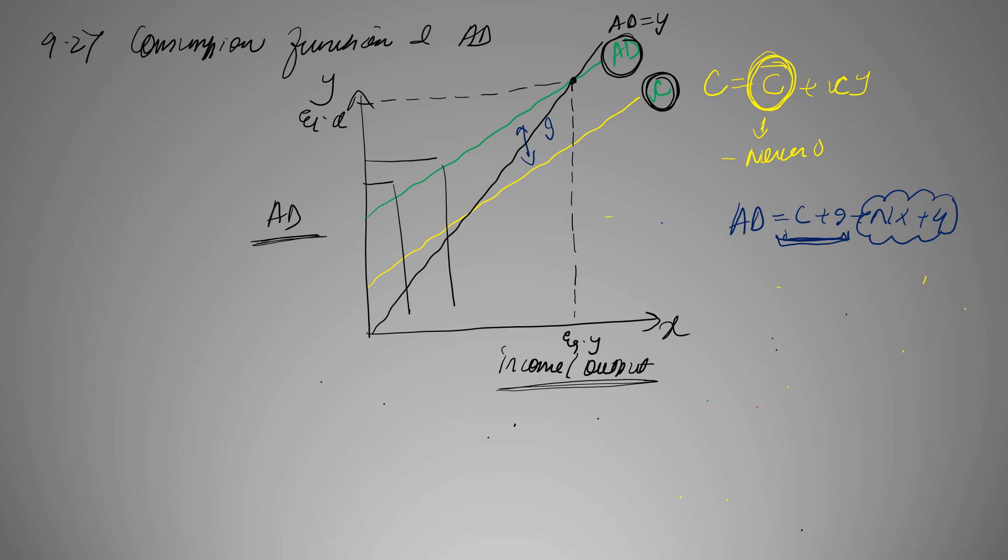Now, let us talk about savings. I just talked about consumption. You consume is equal to C bar plus CY. But what about S? S is the part of income that is not consumed. Hence, if this Y is income and C is consumption, then our S is saving.